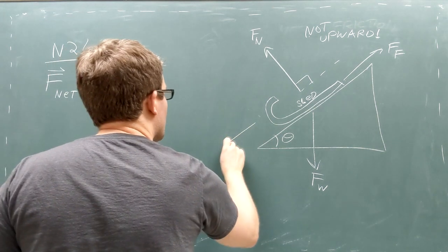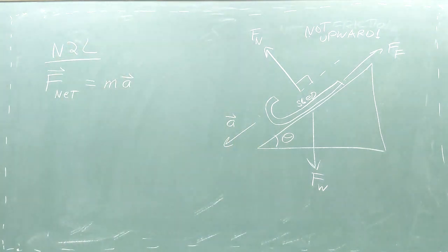Since the sled will move along the sloped hillside, we know that this acceleration vector will point along the same angle as the hillside.